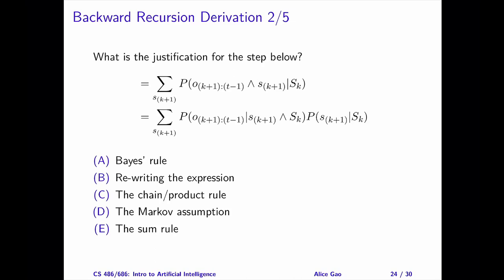Step 2. Pause the video and choose an answer. The correct answer is C, the chain rule or the product rule. This is easier to see if we cross out the last variable s sub k in every term. We use the product rule to write the probability as a product of two probabilities.